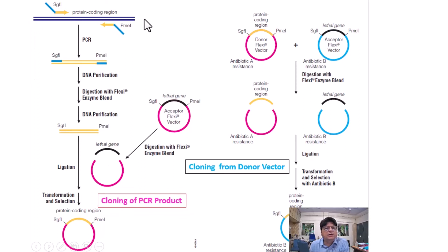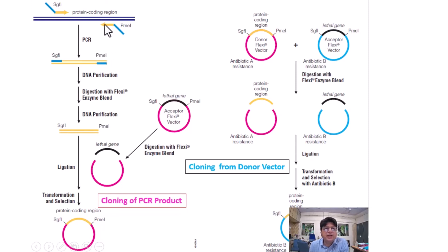After digestion you combine the products without purification. The cloning vector has antibiotic resistance marker A and the expression vector has antibiotic resistance marker B. After transformation, selecting with antibiotic B ensures only cells with the expression vector containing your PCR product survive. This completely eliminates the agarose purification step.